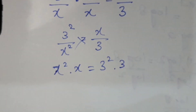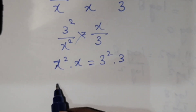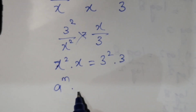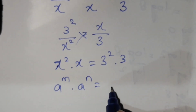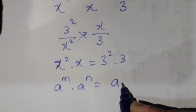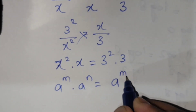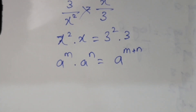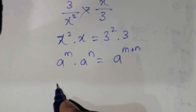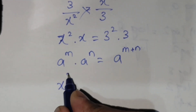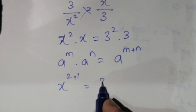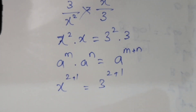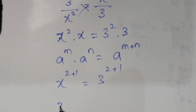We know the formula that a to the power m times a to the power n equals a to the power (m plus n). Using this formula here, the exponents add: 2 plus 1 equals 3, and 2 plus 1 on the right also equals 3.